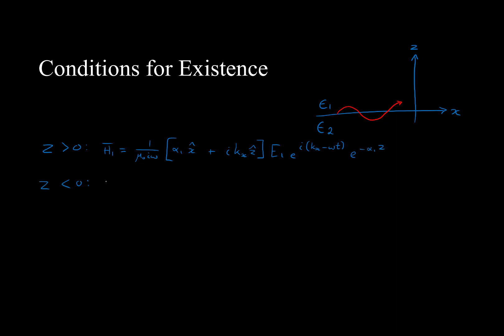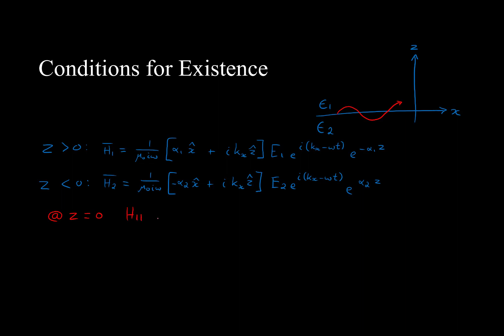And the magnetic equation for the metal. As we know, at the boundary, or where z equals zero, H parallel should be continuous. The x direction is the one parallel to the boundary, and as we can see from those alpha 1 and alpha 2 values, this is not the case. Therefore, surface plasmons cannot exist in the transverse electric case.